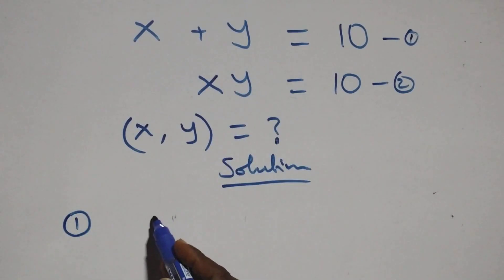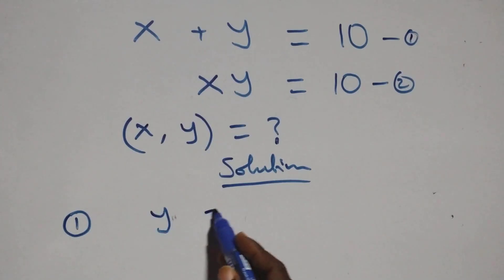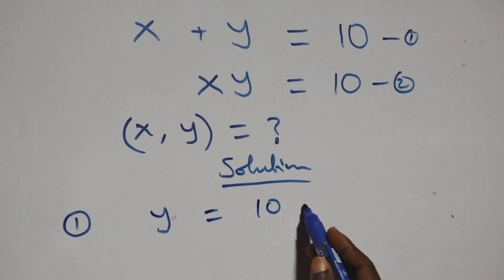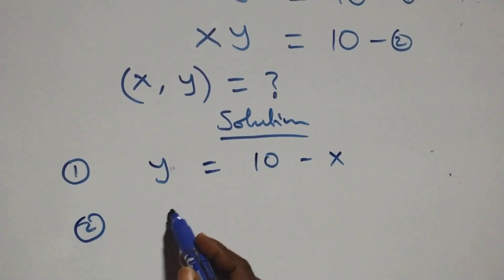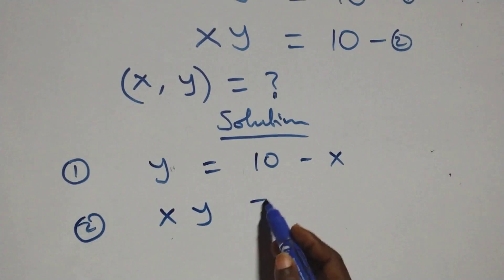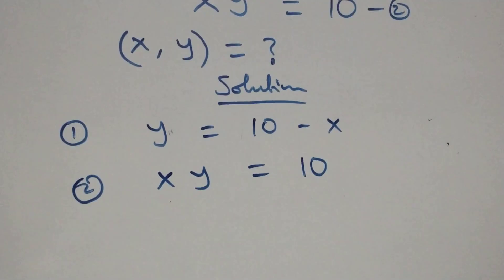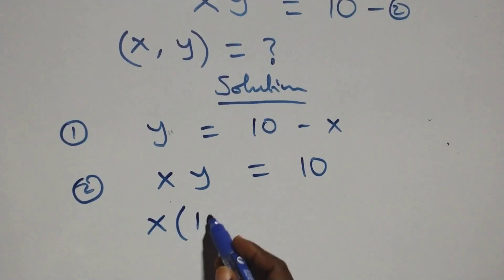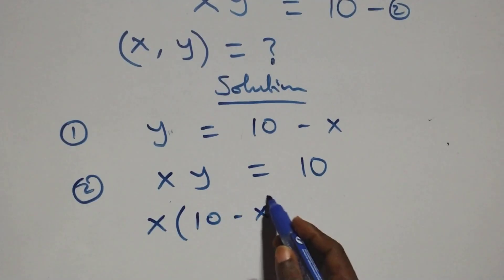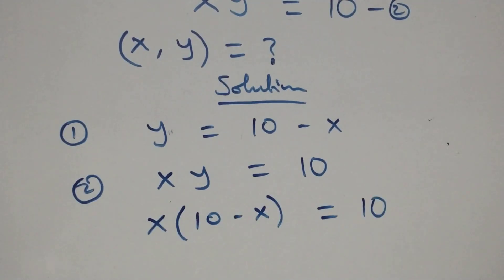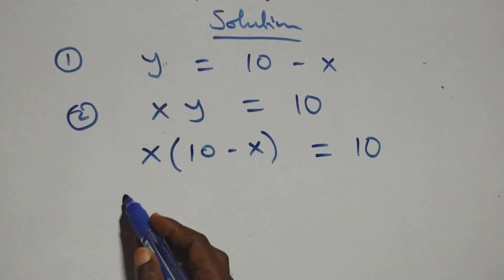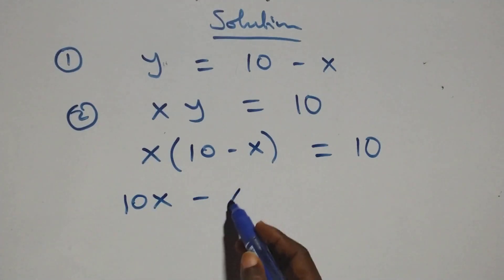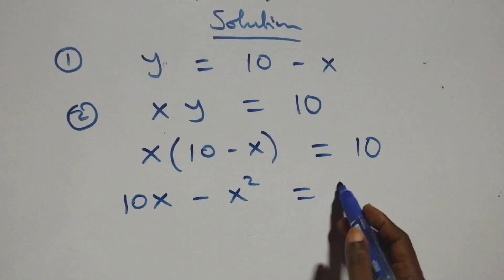From equation one, we make y the subject, giving y equals to ten minus x. From equation two, x times y equals to ten, we substitute the value of y, so this becomes x times (ten minus x) equals to ten. Opening the bracket, this becomes ten x minus x squared equals to ten.